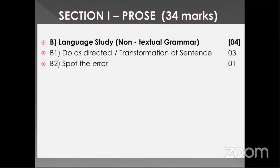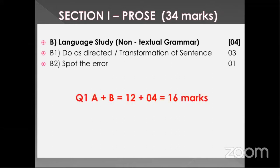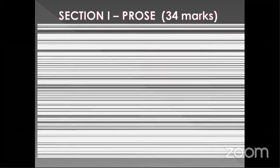In language study, B1 is for three marks — do as directed and transformation of sentences. B2 is spot the error. Any error may be given in the sentence, whether it is a spelling mistake, a grammatical mistake, a punctuation mark mistake, or the whole sentence is upside down — you have to find out how the exact sentence should look and write it accordingly. Spotting the error is very important. So A plus B, 12 plus 4, is 16 marks of section 1, question number 1A and B.